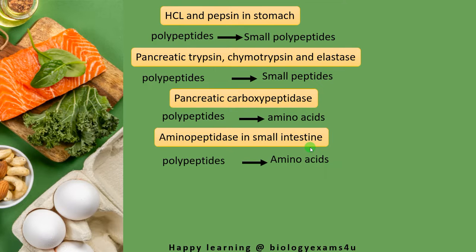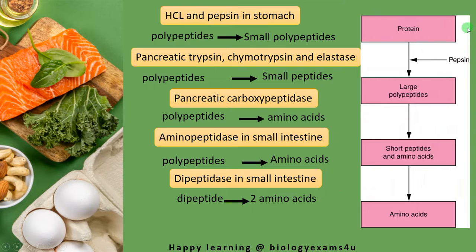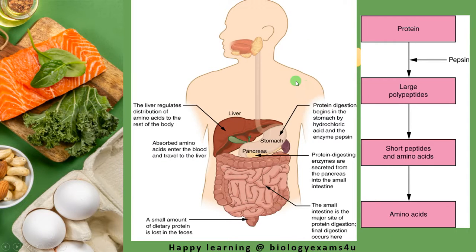Then aminopeptidase in the small intestine — which is the major site of digestion and absorption — further breaks polypeptides into amino acids. Dipeptidase in the small intestine converts dipeptides into two amino acid units. In summary, protein is acted upon by pepsin in the stomach, becoming small short peptides, then further degraded to amino acids by chymotrypsin, trypsin, and enzymes in the small intestine like carboxypeptidase, aminopeptidase, and dipeptidase.